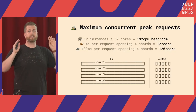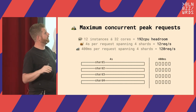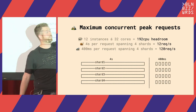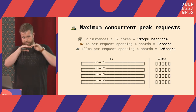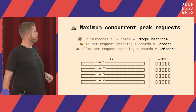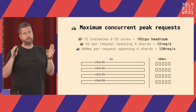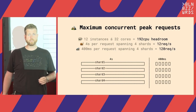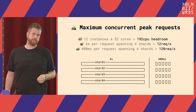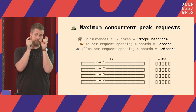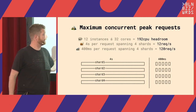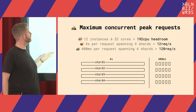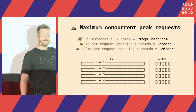Let's start with some easy math. At average, we have 12 instances running with 32 cores, which leaves you with 192 CPU headroom if you take the 50% average. If you have a request spanning four shards and the request takes four seconds, you are able to fulfill about 12 requests per second — just on the headroom. So we thought it would be great to stay on this 50% utilization by reducing the time needed per request.